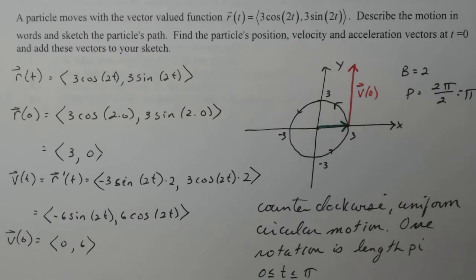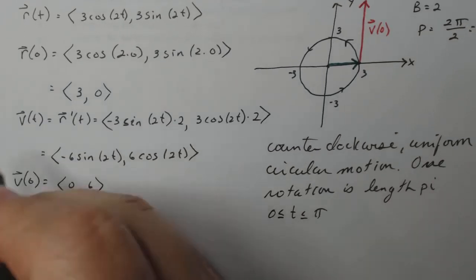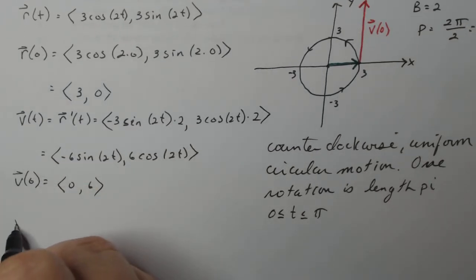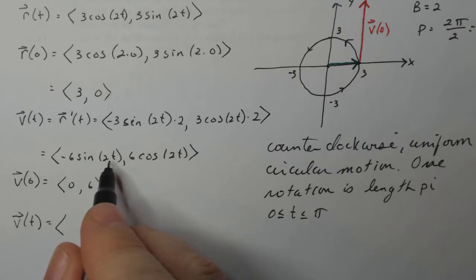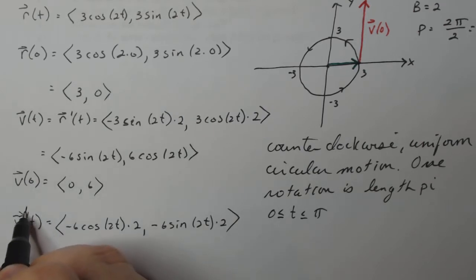Now the last thing it says to do is acceleration as well. So acceleration as we know is just V prime or r double prime. But I'm going to go back up here to V and take its derivative. So the derivative of sine is cosine: minus six cosine two t times two. And this will be minus six sine two t times two.